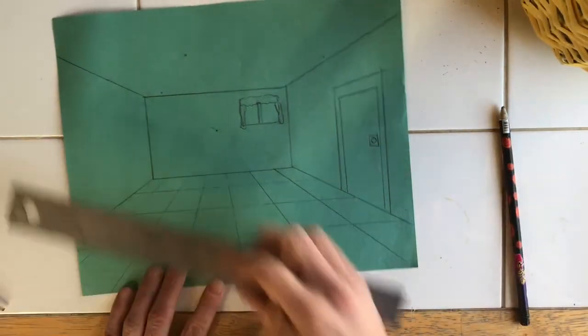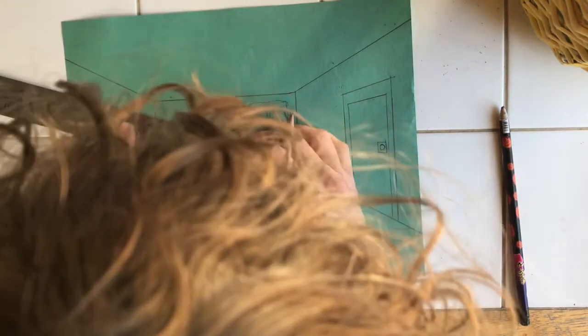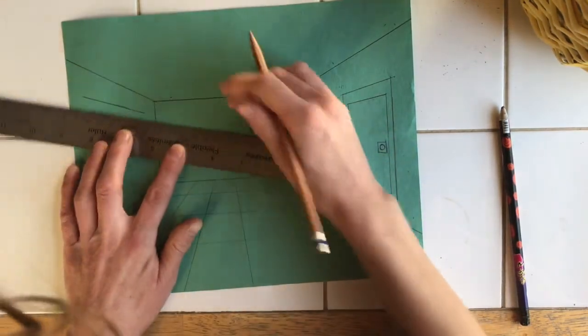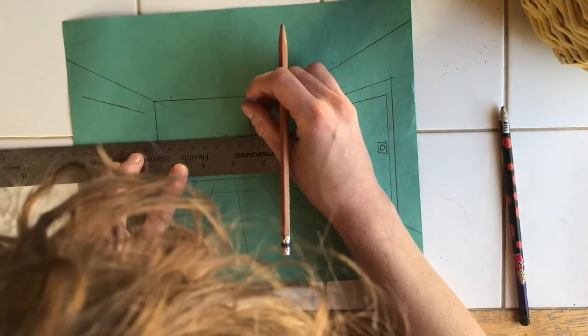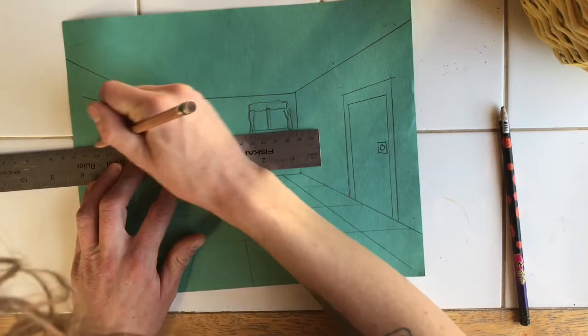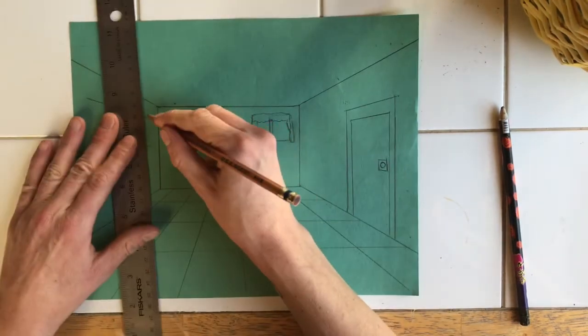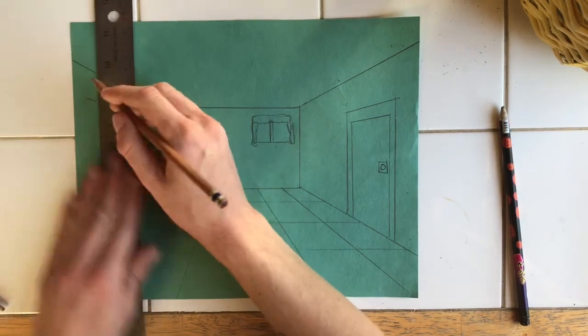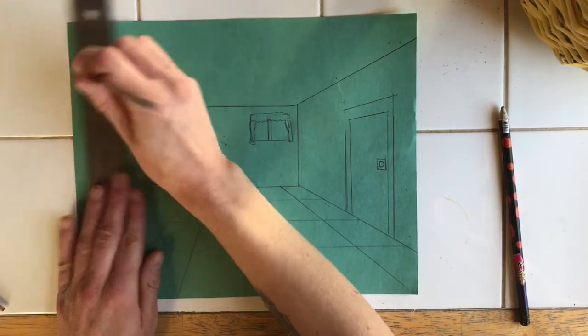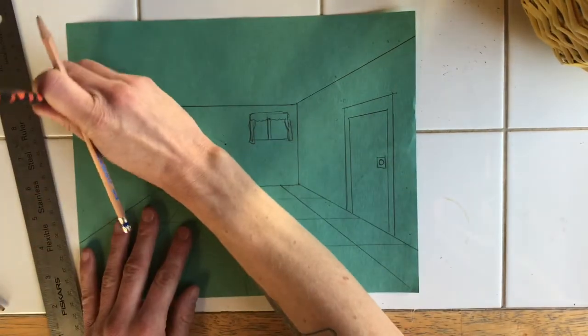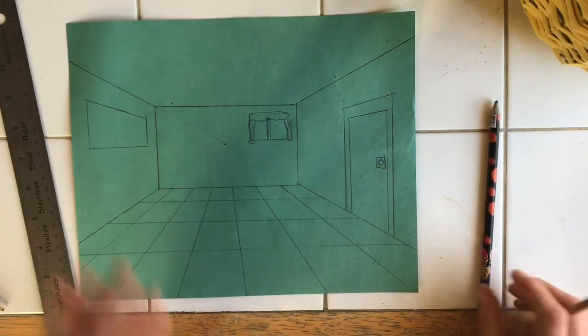And maybe on this side of the wall I'll put a poster or a painting. So I'm going to do two, this will be a large painting I think. Two lines coming out from the vanishing point. And then two vertical lines here. Put a frame around it. Create what's going to be in the painting.